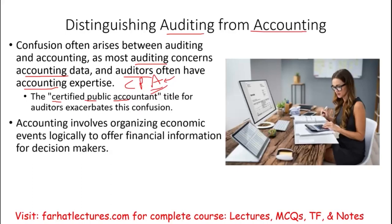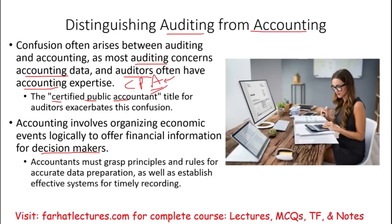Accounting involves organizing economic events — basically looking at information and transactions — organizing those transactions going from the general journal to the ledger to the financial statement, to help users make financial decisions. That's what accounting is: recording transactions and events and reporting those transactions and events to the users so they can make better financial decisions.